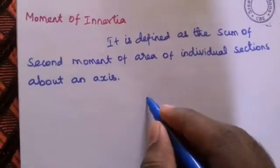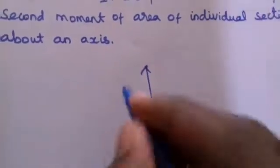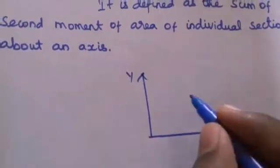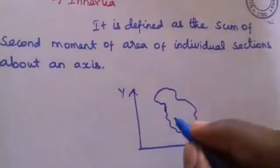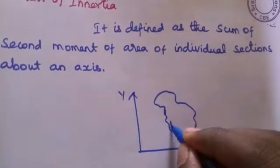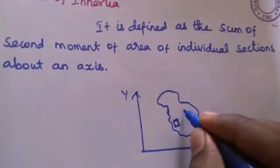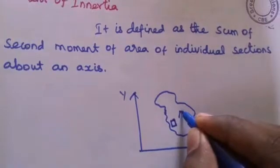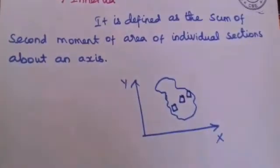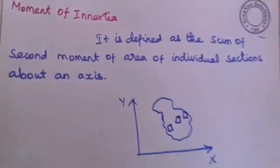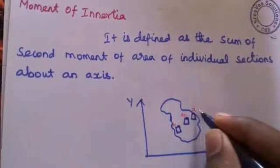This is a plane. This is x-axis and this is y-axis. Here is another object. Now, here is a simple one. Three small portions. This is a1, this is a2, this is a3.